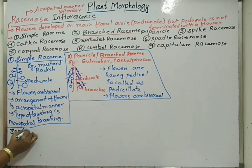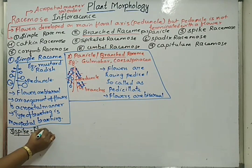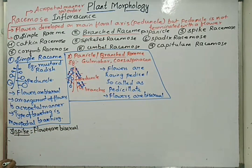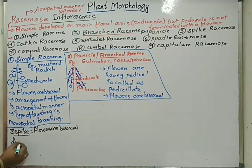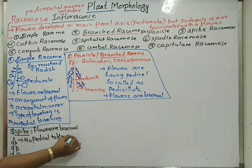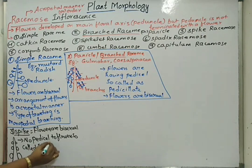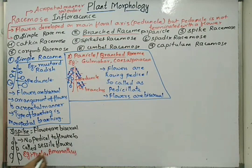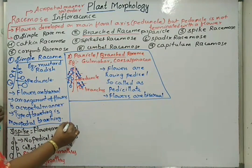Third type is spike type of racemose inflorescence. Flowers are bisexual, but flowers do not have a stalk to hold — there is no pedicel seen in the flowers. Such types of flowers are called sessile flowers. Spike inflorescence is seen in case of Typha, Amaranthus, and Achyranthes. Examples are very important in all types of inflorescence.